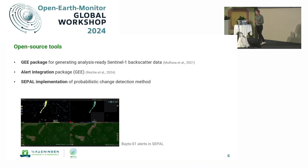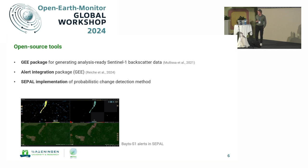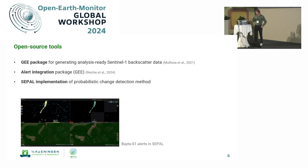We have also invested quite some effort in open source tools. The backbone of RADD Alerts is the pre-processing of Sentinel-1 data — that's probably 60-70% of the work, while the algorithm is relatively simple at maybe 20-30%. We provided an open Google Earth Engine package to pre-process Sentinel-1 data to an analysis-ready level, and we've seen a lot of uptake in the community — about 150-170 references over the last one and a half years. We also released an alert integration package allowing users to integrate available alerts in Google Earth Engine.